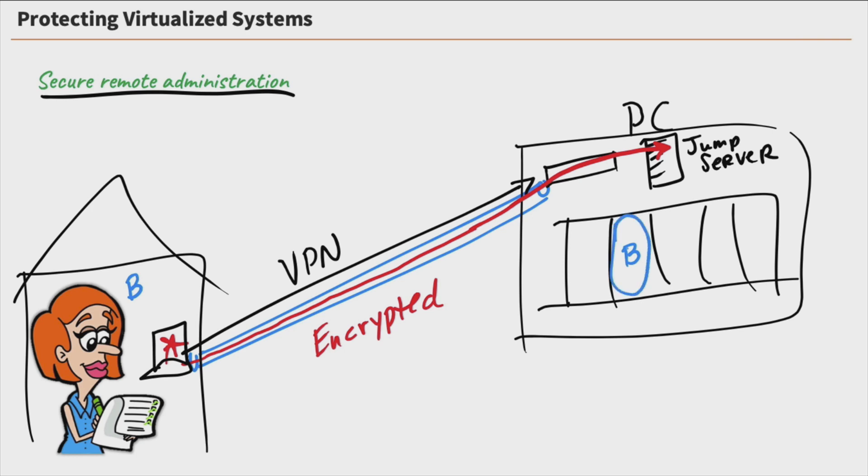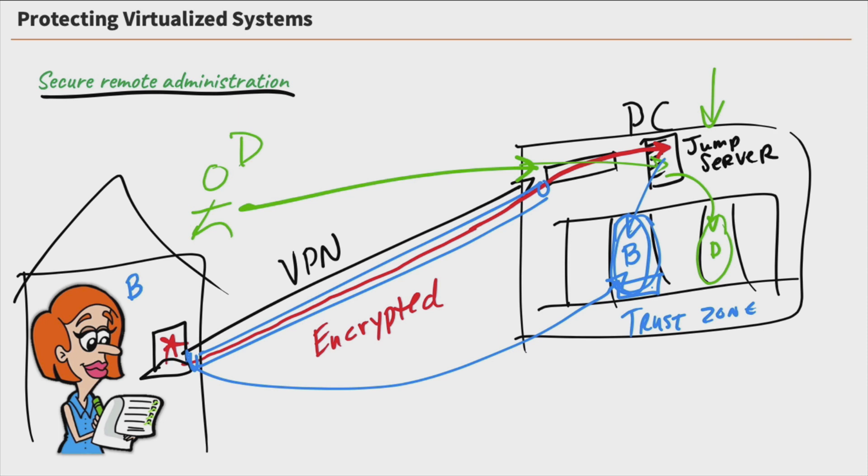If this user here is part of customer B and this is customer B's trust zone, their entire rack, then that user will only be able to access their own trust zone. If we have another user from company D, when they go over to this jump server, they're only going to be able to access their information. This allows them to connect to a desktop on this jump server in the data center and they can use this desktop to run whatever testing or configuration they need to do.